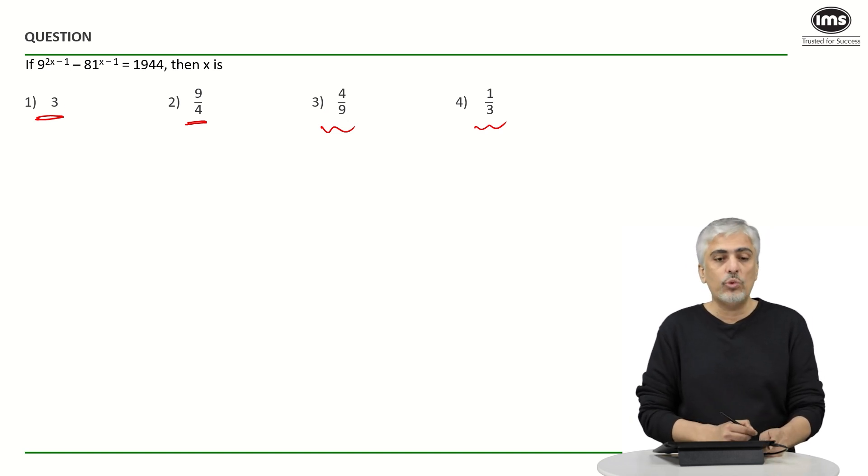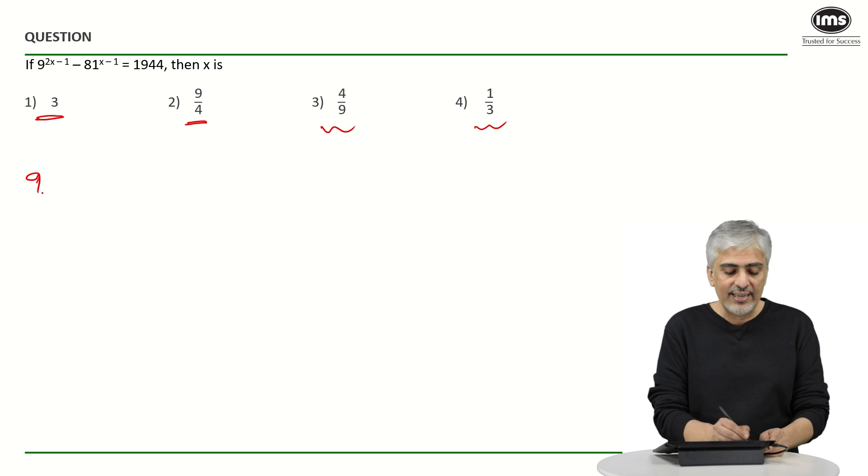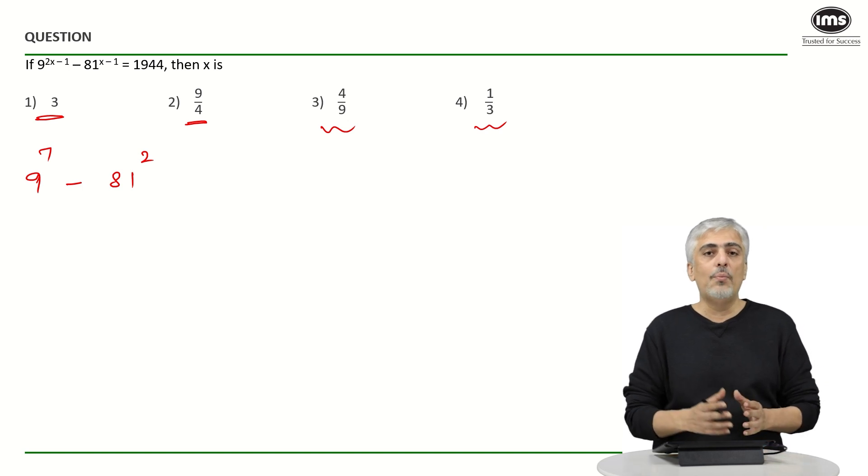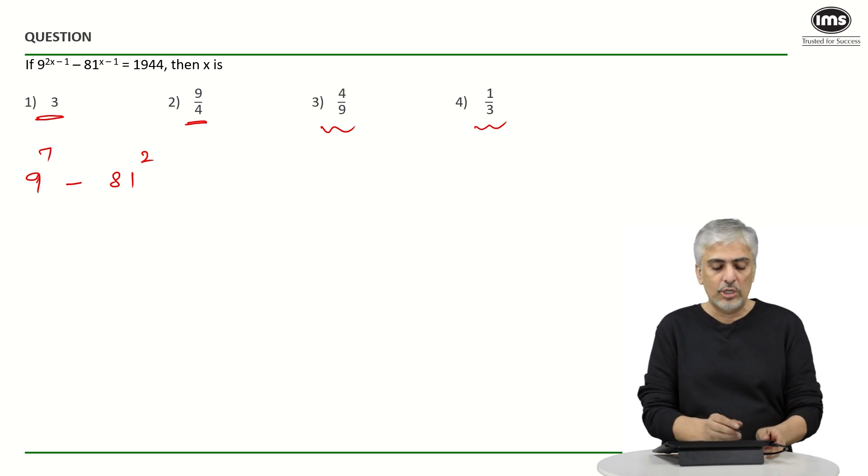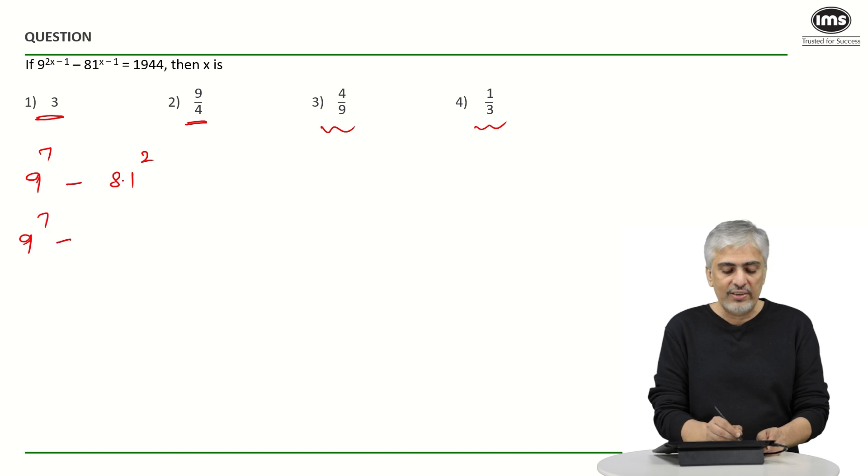But anyway, if you go by options, if you put x as 3, what you will get? You will get 9 raised to 6 minus 1 which is 7, minus 81 raised to 2. Now think a little bit. How much is 9 raised to 7? How much is 81 raised to 2? If you want, you can take something common also.